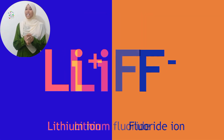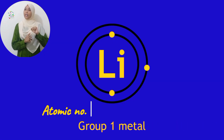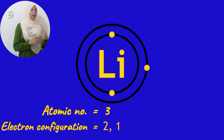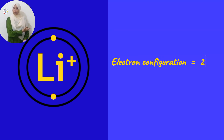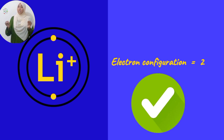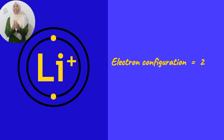Moving on to the next example: lithium fluoride. Lithium is a metal, fluorine is a non-metal. The atomic number of lithium is 3, giving an electronic configuration of 2, 1. Lithium belongs to the same group as potassium and sodium, so it needs to lose its single valence electron. This forms an ion with an electron configuration of 2. The first energy level can take a maximum of 2 electrons, so an ion with 2 electrons is stable.